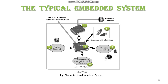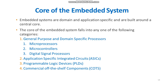The last element is other supporting integrated circuits and subsystems. So these are the elements of the typical embedded system. Moving on to the core of embedded systems — embedded systems are domain and application specific and are built around a central core. The core of the embedded system falls into one of the following categories: general purpose and domain specific processors, application specific integrated circuits, programmable logic devices, and commercial off-the-shelf components.